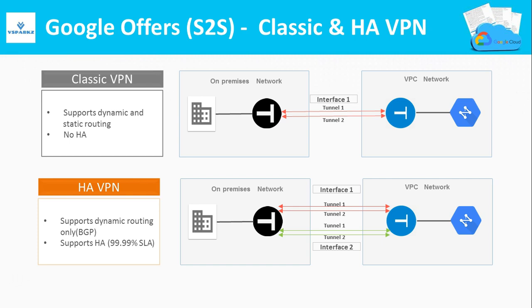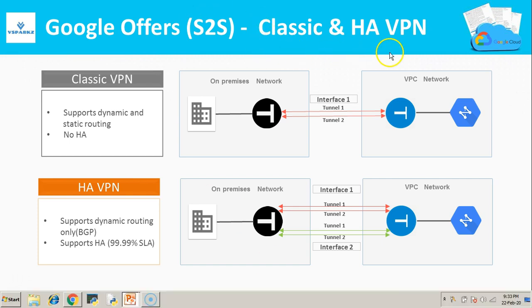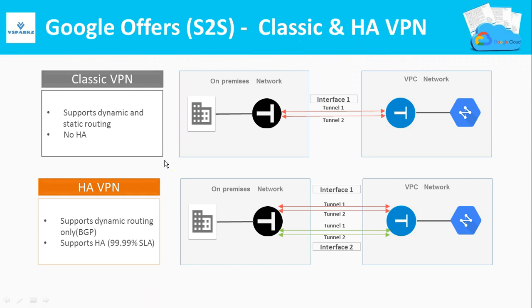What does Google offer in VPN? It offers two types of VPNs: Classic VPN and HA VPN. In HA VPN there is a high-availability option where two interfaces are created with one or more tunnels on each interface. This gives an SLA of 99.99% and it supports only dynamic routing.